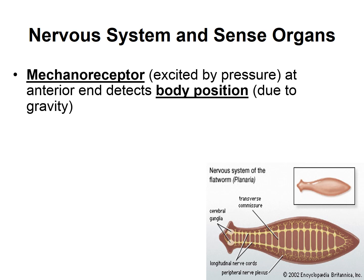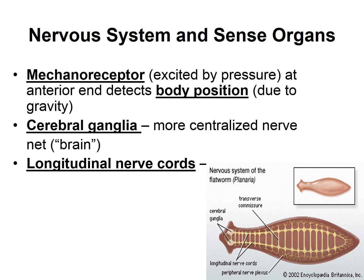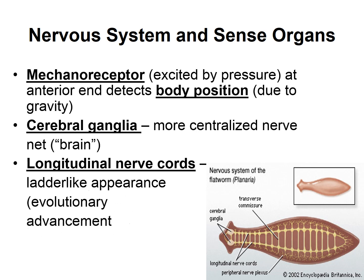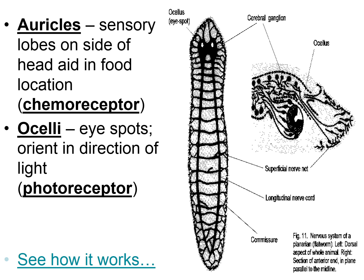In the planaria, they have mechanoreceptors that can sense pressure at their anterior end, detecting body position and gravity. They have cerebral ganglia that give them a little brain area. They have longitudinal nerve cords that give their nervous system a ladder-like appearance — one of those evolutionary advancements in nervous systems. The auricles are sensory lobes on the sides of their head to help them find food. Their eye spots — scientifically called ocelli (singular: ocellus) — have photoreceptors to help them sense light, though they don't see like we do.